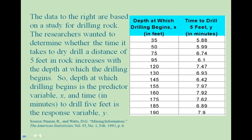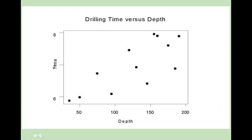Let's look again at the example we've been following throughout this module. We have data based on our study for drilling rock. The first list, x, is the depth at which the drilling begins. The second list, y, is the time to drill 5 feet in minutes. In a previous section, we created a scatter diagram, and we can see that our data is trending in an upward direction.